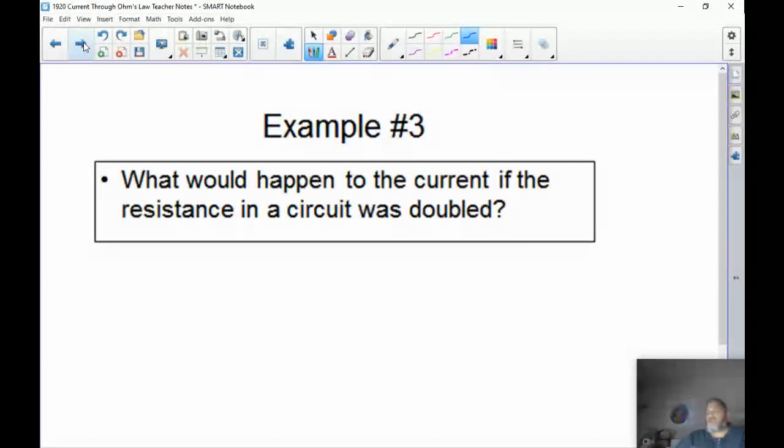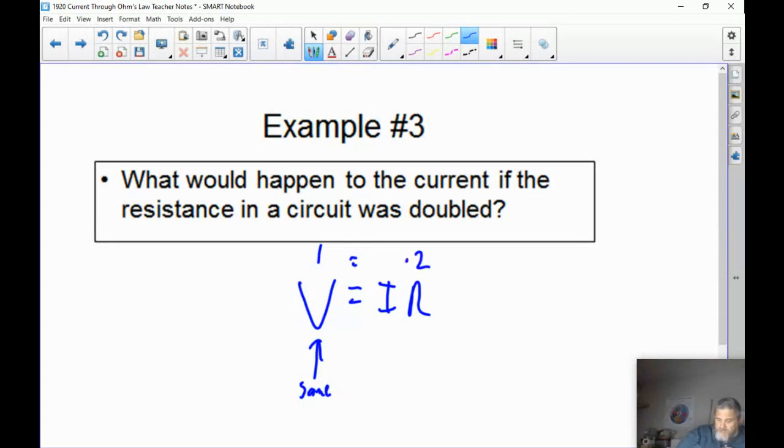So what would happen to the current if the resistance in my circuit was doubled? We write out the equation. What happens to the current if the resistance was doubled? We're going to assume that the voltage stays the same, so we put a 1 over that. And if the resistance is doubled, I put a 2 over that. What would I have to do to the current to make this equation work? 1 equals what times 2? That would be 0.5. Because if I double the resistance, my resistance goes up, my current has to go down. And vice versa. If my current goes down, my resistance goes up. So the current is going to change by 0.5 times. It's going to get half of what it was.